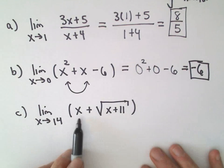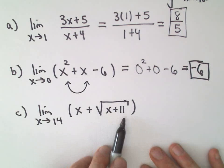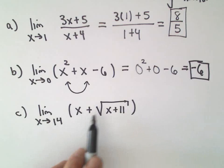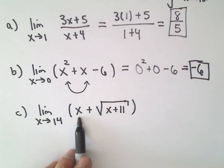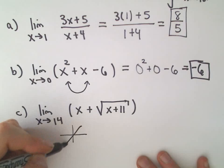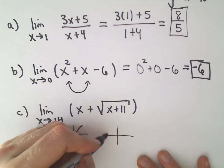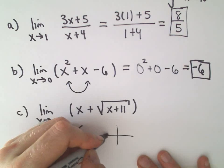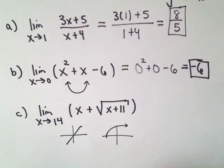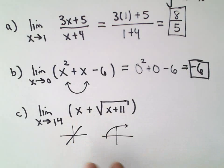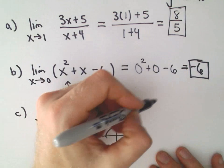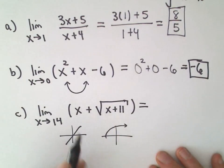Here we've got x plus the square root of x plus 11. If you think about the function y equals x, that's a nice continuous function. Square root of x plus 11, that's just a square root that's been moved over a little bit to the left. There's a rule that says if you add two continuous functions, it stays continuous. So again, all we're going to do is just plug in the number 14.